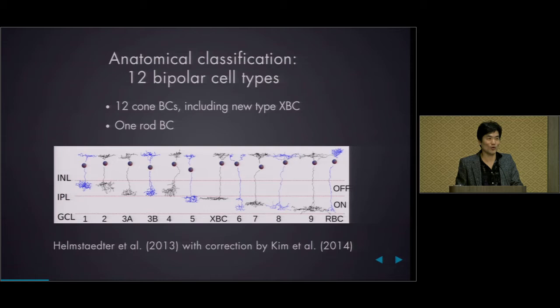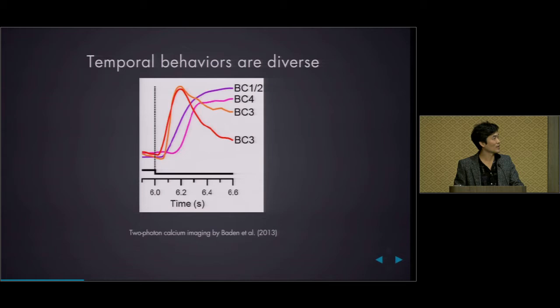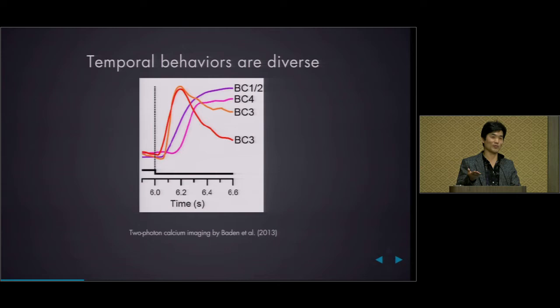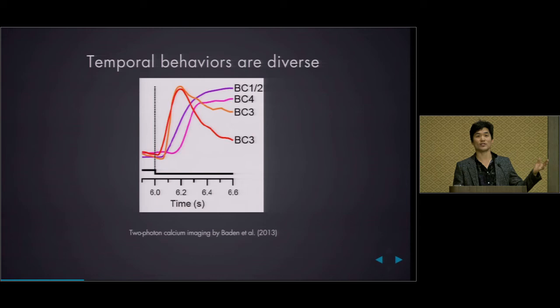Why do we need all these bipolar cell types? You may have heard bipolar cells are center-surround filters — so why do we need 12 types? People are beginning to figure that out with two-photon imaging. Thomas Euler's lab found that the temporal response properties of bipolar cells are diverse. Some off-bipolar cells respond 50 to 100 milliseconds more rapidly than others. There's also a difference in shape — transient versus sustained responses. Once you know there are types, you can ask how they're functionally different. There are also differences in color tuning, and neuroanatomy is critical because you can't even phrase questions about function if you don't know what the types are.